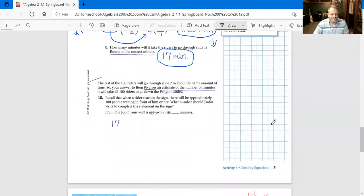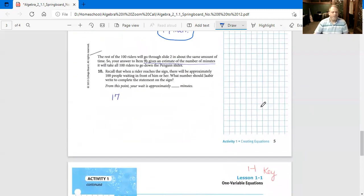Number 10: The rest of the 100 riders will go through slide 2 in about the same amount of time. So your answer to item 9b gives an estimate of the number of minutes that will take all 100 riders to go down the penguin slides. Recall that when a rider reaches the sign, there will be approximately 100 people waiting in front of him or her. What number should Jabir write to complete the statement on the sign? We're going to write 17 minutes.